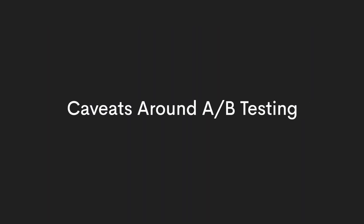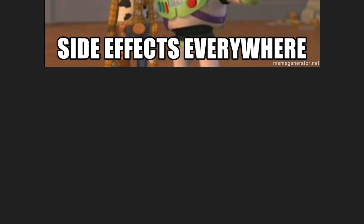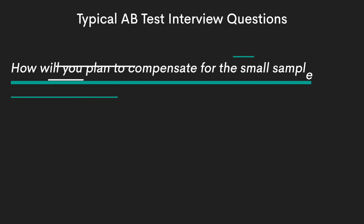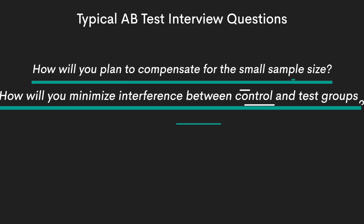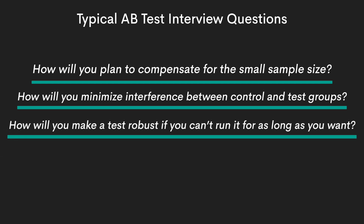When answering an A-B test question, interviewers won't only test your theoretical knowledge because you'll rarely work in ideal circumstances — they want to see how you handle real-world challenges. There are two ways to deal with them: you don't, or you do, and answer typical questions like: How do you plan to compensate for a small sample size? How will you minimize interference between the control and test groups? How will you make a test robust if you can't run it for as long as you want? The last two questions are especially important in real-life scenarios.